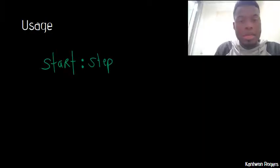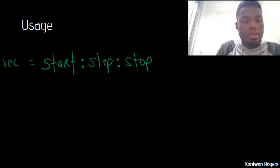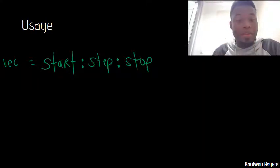So the basic syntax for the colon operator is as follows. We have the number we want to start at, then a colon, then the step size, then another colon, and the number we want to stop at. And we can save this inside of the vector.